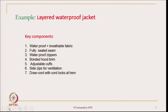Other components include a bonded hood brim, adjustable cuffs, side zips for ventilation if required, and a draw cord with cord locks at the hem so we can tighten the jacket. These are the key components for developing a waterproof jacket. So we make a list — this is the first step.